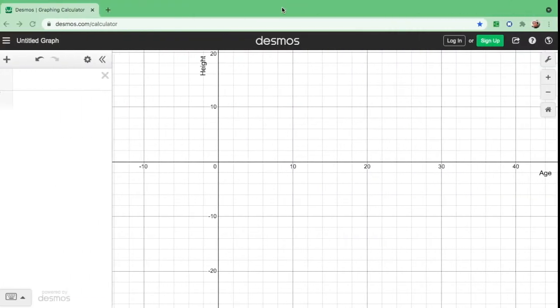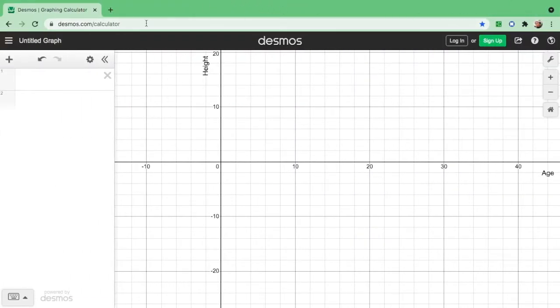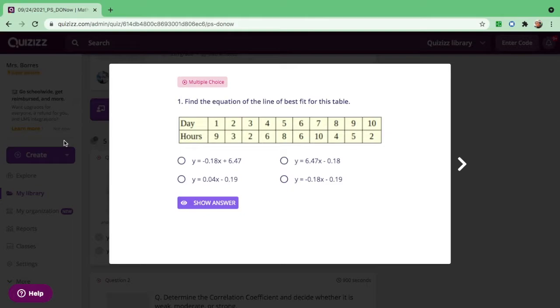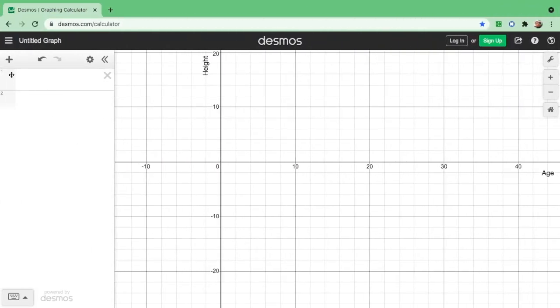So let's start with pulling out Desmos calculator. Just type it in and this one will show you. So to find the equation of the line of best fit, let us click the add item and the table.